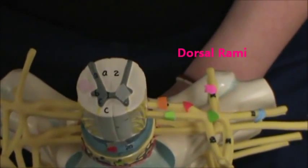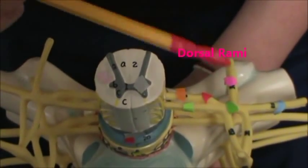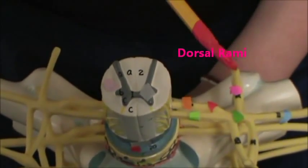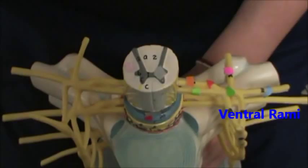And then in pink we have the dorsal rami. And you can remember which one is the dorsal rami because the dorsal rami is on the posterior side of the spinal cord. And then in blue we have the ventral rami.